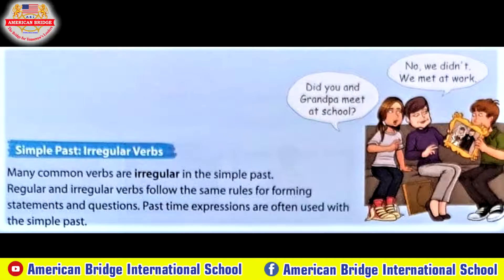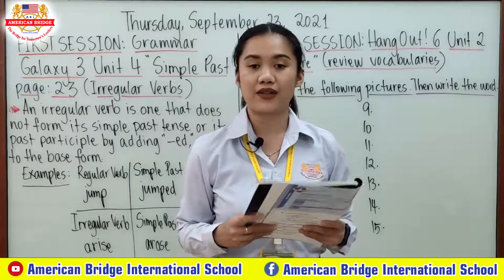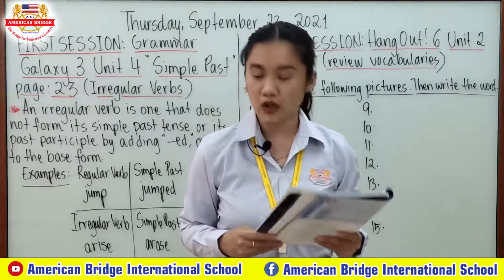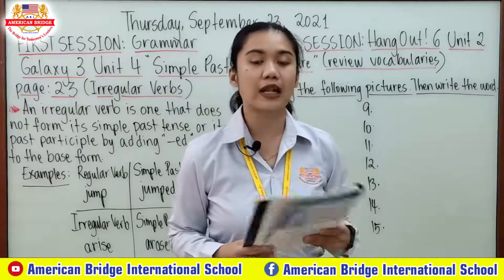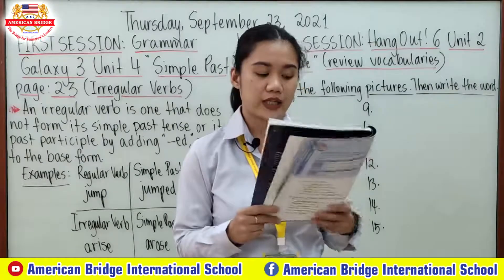Take a look at these forms, everyone. Here's the chart for affirmative, negative, and yes/no questions. Now, past time expressions — these are: yesterday, last night, an hour ago, in 2007, and then. As you remember, everyone, we already talked about this past time expression in our different textbook.